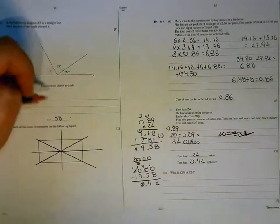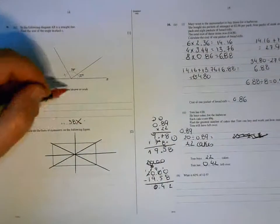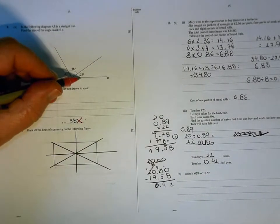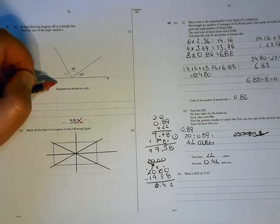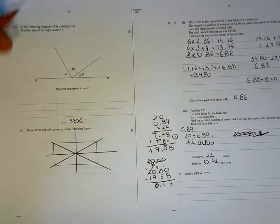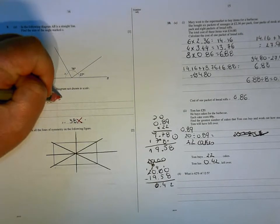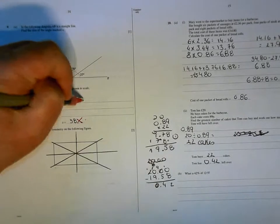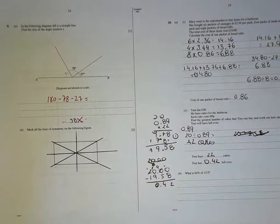58 is wrong. And you haven't given me any method. What you need to be doing there is to take these two off 180. Because you should know that there are 180 degrees lying on the straight line. So that's the sum that you have to do.